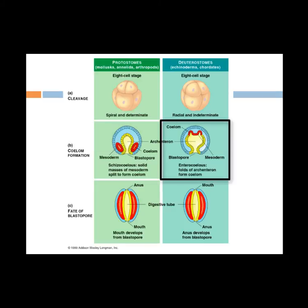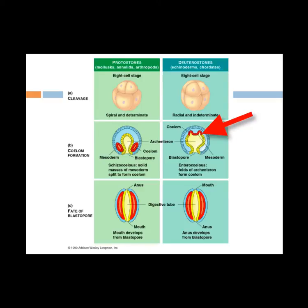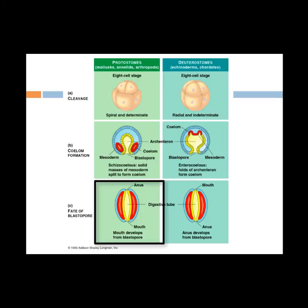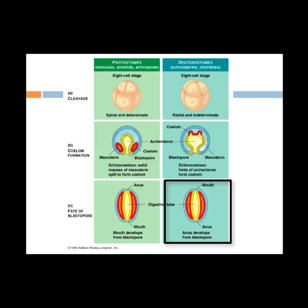Deuterostomes have radial cleavage, where the planes are parallel and perpendicular to the vertical axis of the egg. They have indeterminate cleavage, meaning each cell is like a stem cell and can still develop into a complete embryo. This is how identical twins form when cells separate and another embryo grows into a baby. In deuterostomes, the mesoderm buds from the wall of the archenteron, which is the pouch, to form the coelom cavities. In protostomes, the mouth forms from the first opening, which is the blastopore. In deuterostomes, the mouth forms from the second opening, and the blastopore becomes the anus.